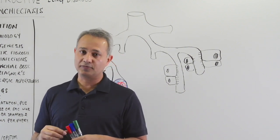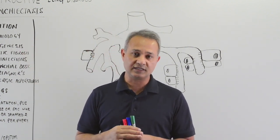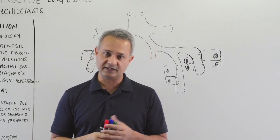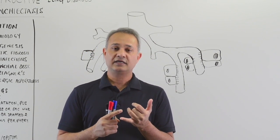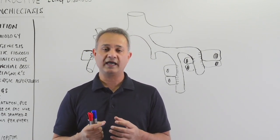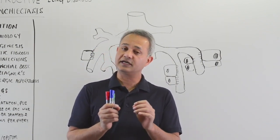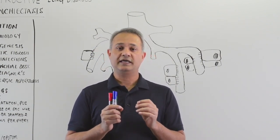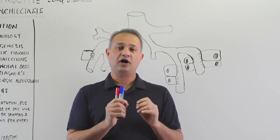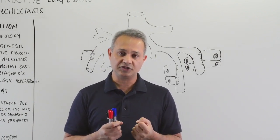This is Mubeen and we are talking about the pathologies of the pulmonary system. The disease is bronchiectasis. The definition of bronchiectasis is chronic permanent dilatation of the bronchi and the bronchioles due to or associated with chronic infections that cause destruction of the airway walls.